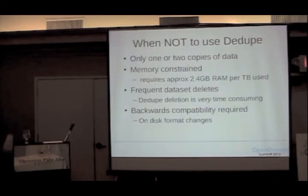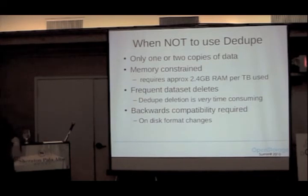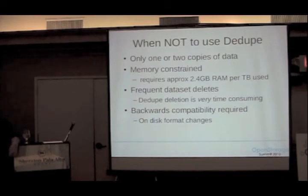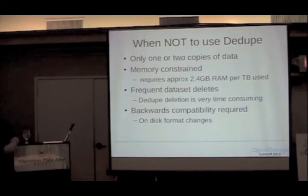There are scenarios where I would discourage the use of deduplication. If you only have one copy of your data, obviously there's no deduplication benefit. If you have two copies and you use dedupe without dedupe ditto turned on, you're implicitly reducing data redundancy without getting much benefit. Storage disk is cheap, after all — I would discourage dedupe if you only have two copies of your data.